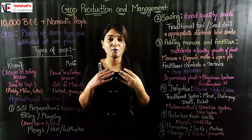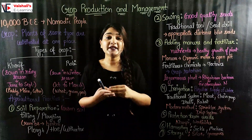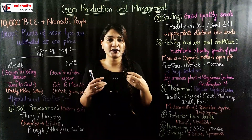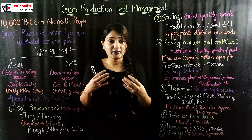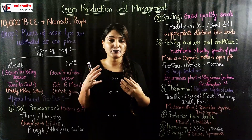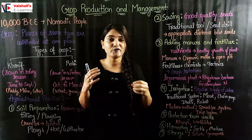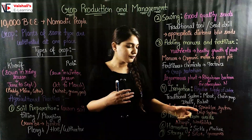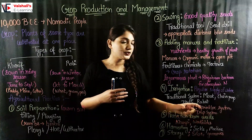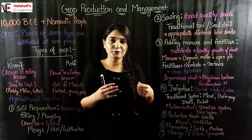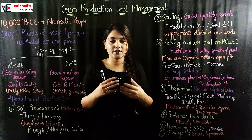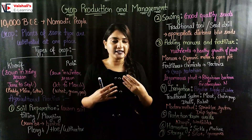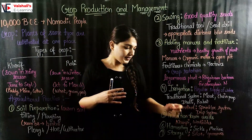The next practice is protection from weeds. Weeds are undesirable plants that compete with the main plant for nutrients, water, and air. To remove them, we can use the kharpi, which is a mechanical tool, or we can use weedicide, which is a chemical. Farmers using weedicides must be very careful while handling these chemicals.